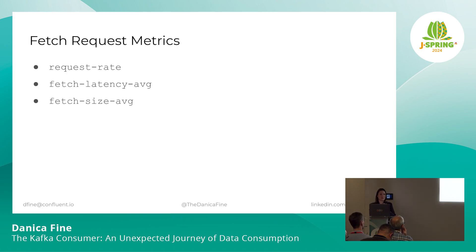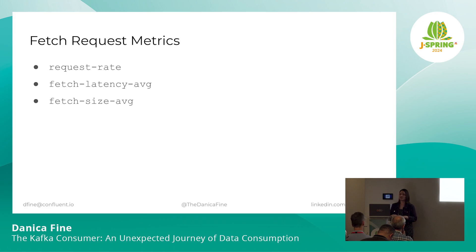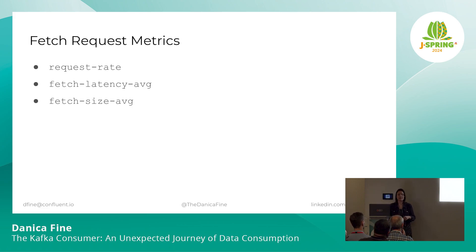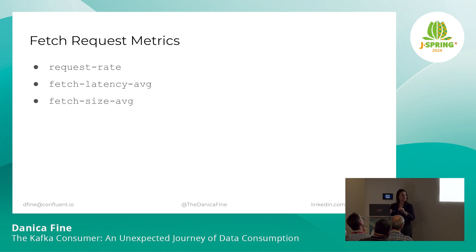If you want to understand if your fetches are working as they should, there are good metrics to keep track of. We have request rate — the number of requests per second that the consumer is actually issuing to the brokers. Then we have fetch latency average — once we issue the fetch request to the broker, a timer starts, and this describes how long that whole process takes to receive a response back. Finally, we have the average amount of data being returned per fetch. It's always good to check this and see how it compares to the mins and maxes we're sending along with the request.